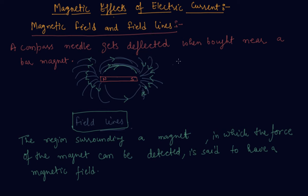Magnetic field is a quantity that has both direction and magnitude.